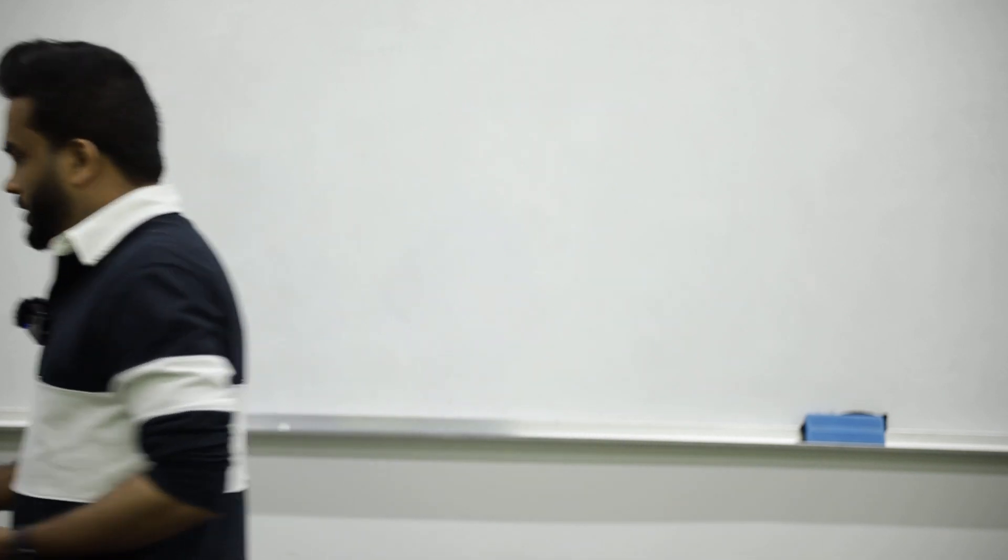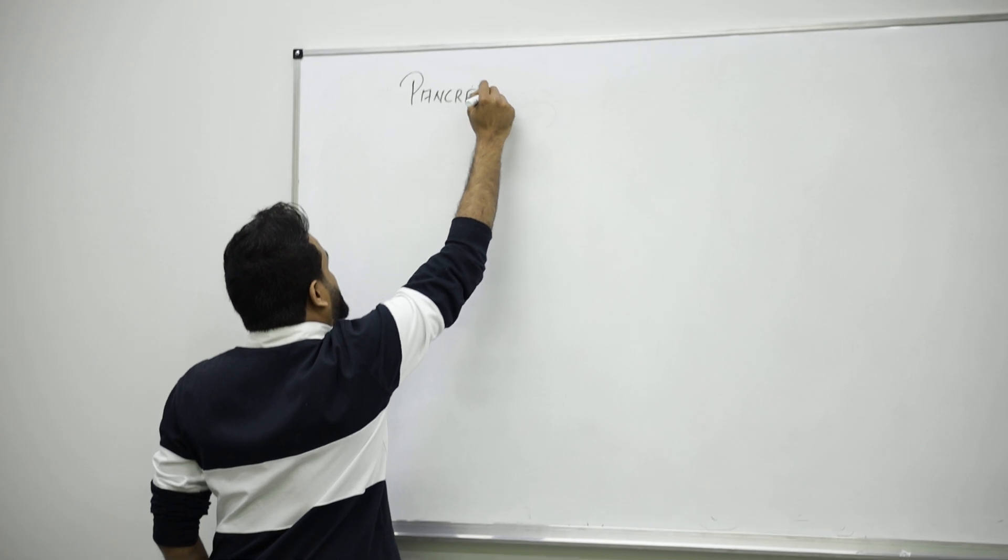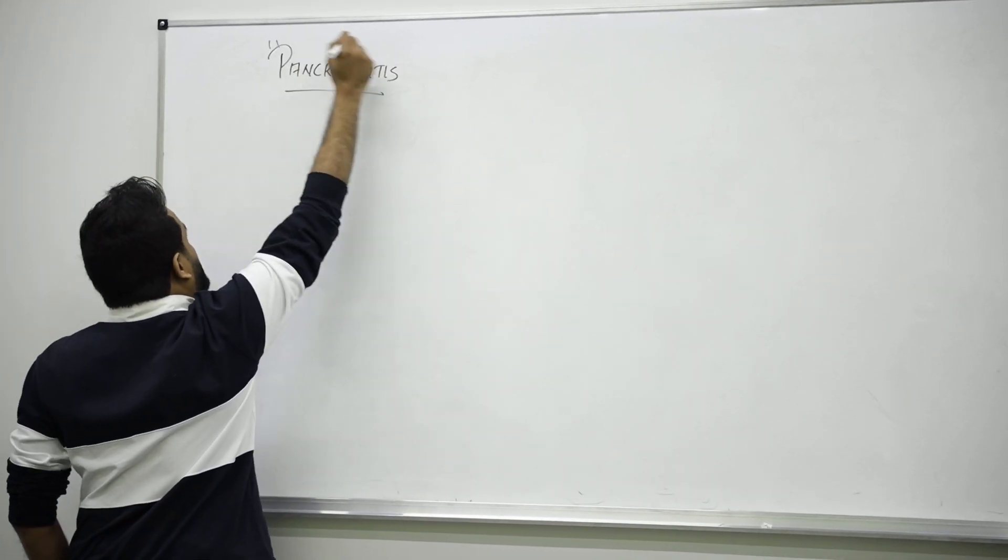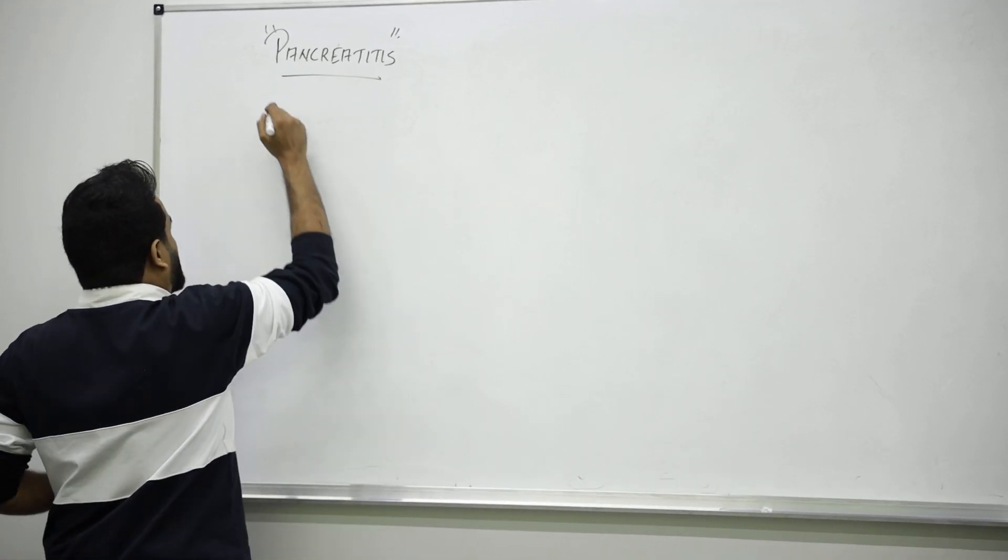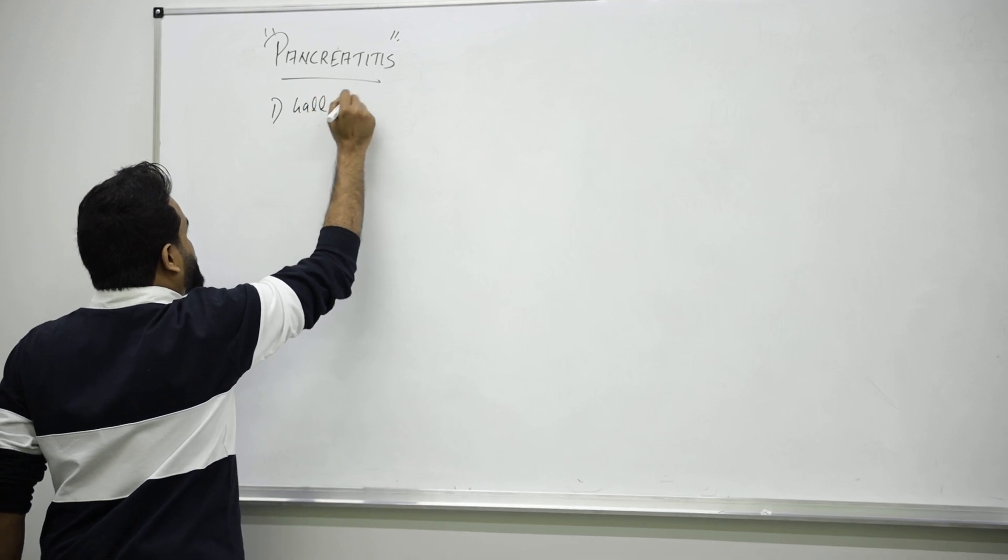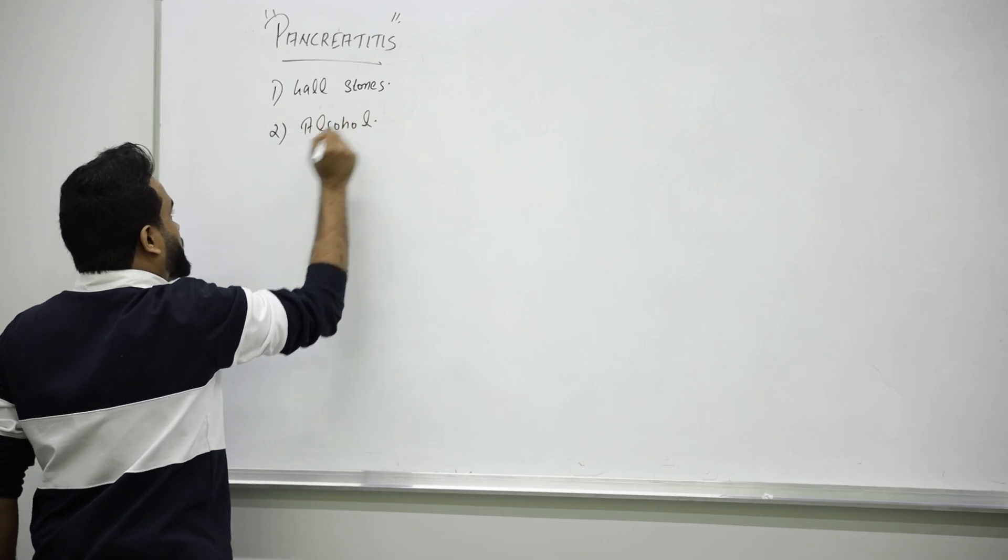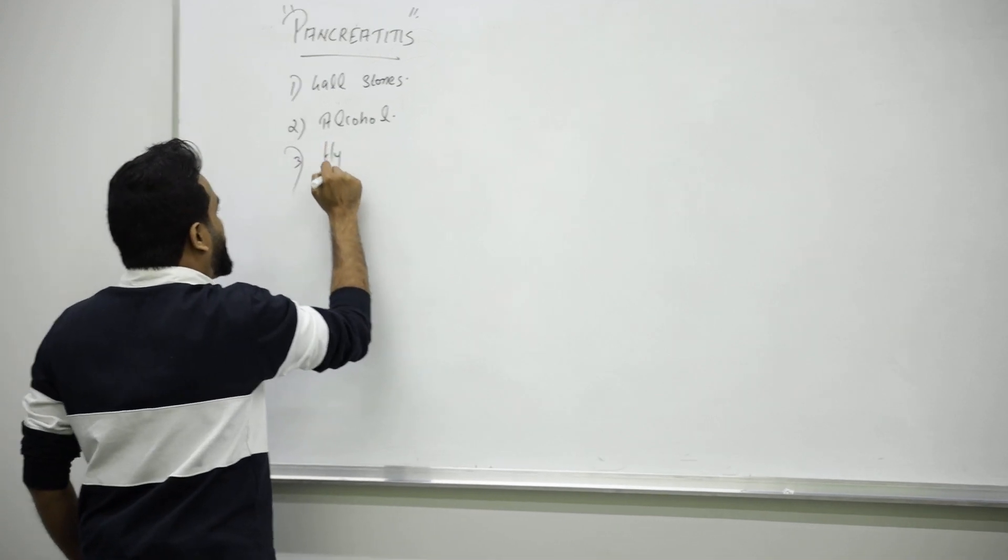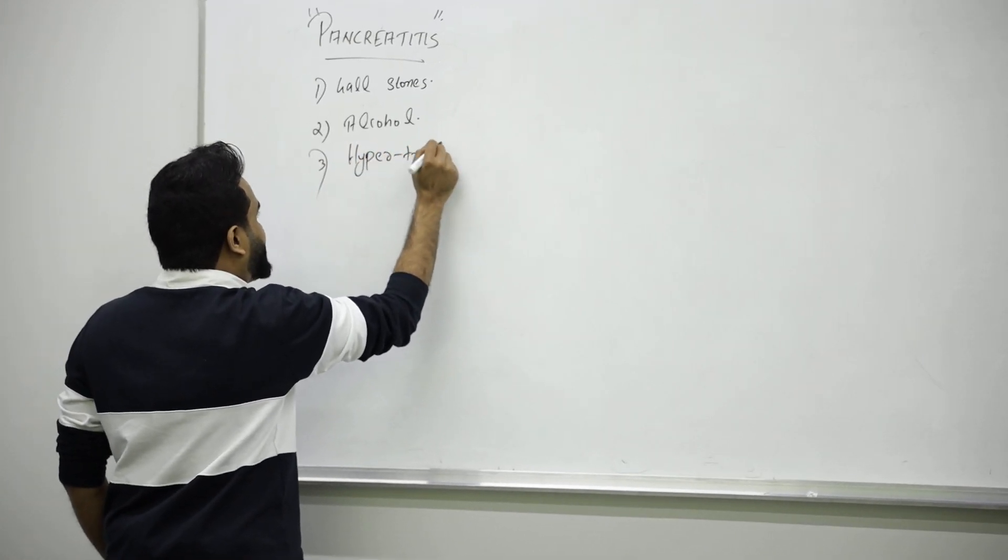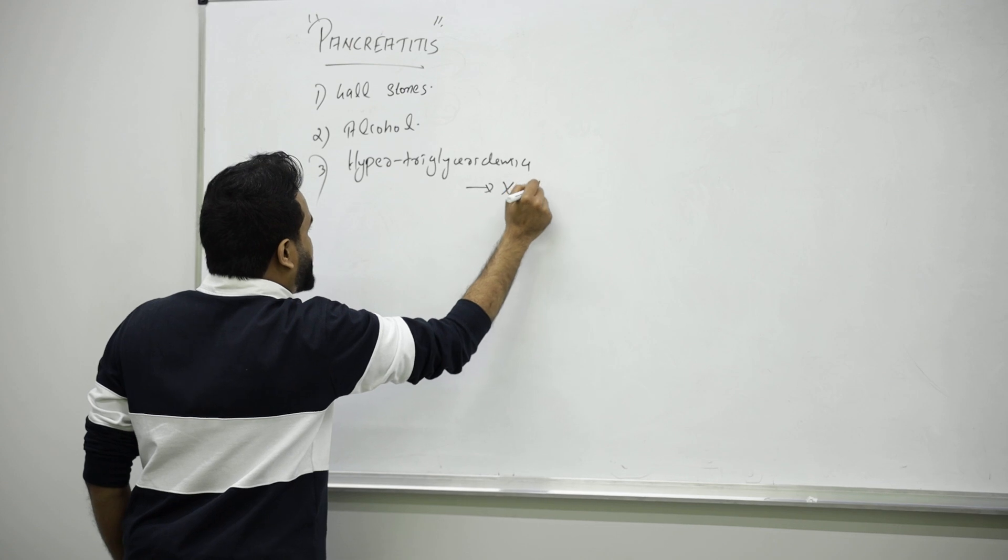Next topic we are going to learn is pancreatitis. Talking about pancreatitis, inflammation of pancreas. The main causes are gallstones, the other one is alcohol. It can also be caused by hypertriglyceridemia where you can see xanthomas.